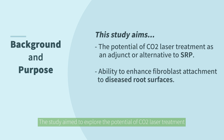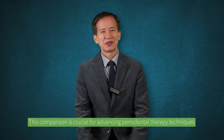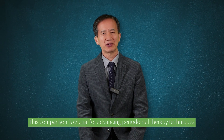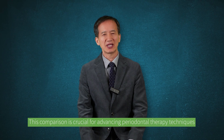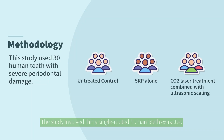The study aimed to explore the potential of CO2 laser treatment as an adjunct or alternative to SRP, focusing on its ability to enhance fibroblast attachment to diseased root surfaces. This comparison is crucial for advancing periodontal therapy techniques and improving patient outcomes.